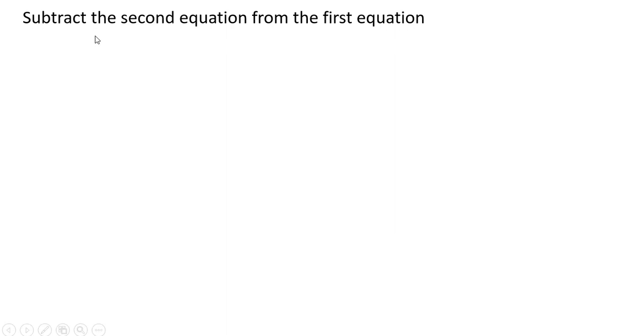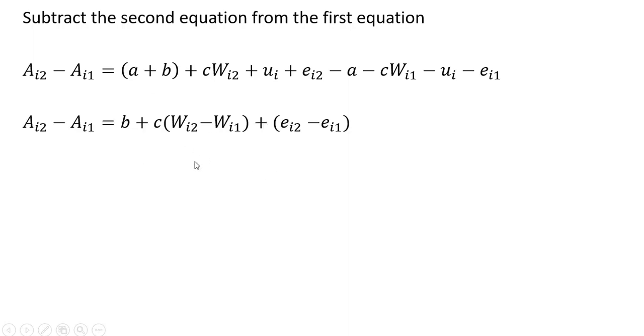So the first thing we're going to do, we're going to subtract the second equation from the first equation. And some things will cancel. The U's are going to cancel. The A's will cancel. We'll factor out the coefficient C and combine the error terms.